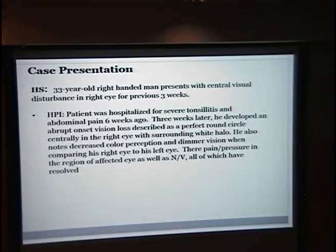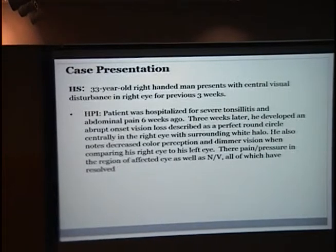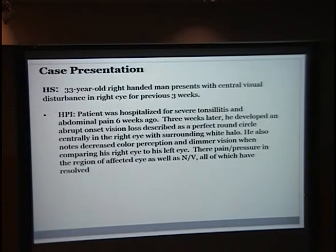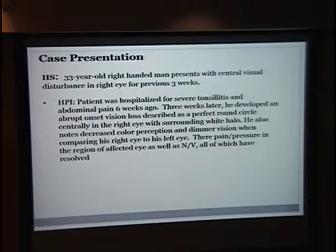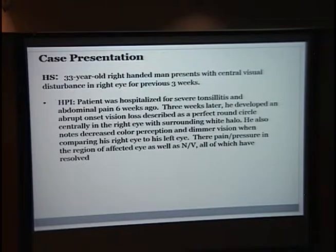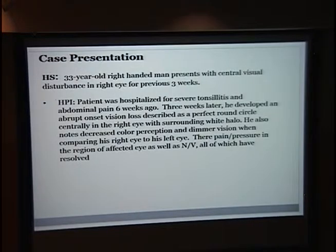In terms of my case presentation: a 33-year-old right-handed man presented with central visual disturbances in the right eye for the previous three weeks. He was notably hospitalized for severe tonsillitis as well as abdominal pain about six weeks prior. Three weeks later, he developed a rough onset of vision loss described as a perfect round circle centrally in the right eye surrounded by white halos. He also noted decreased color perception and dimmer vision comparing his two eyes, with more loss on the right. There was some pain and pressure associated with the onset, as well as nausea and vomiting, all of which resolved by the time of the visit.